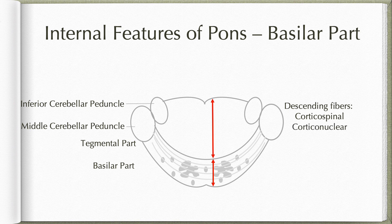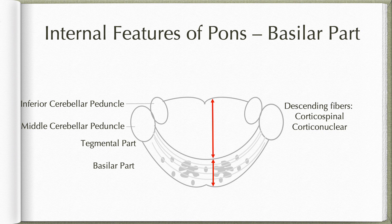The second group of fibers are the corticonuclear fibers. Some of these fibers relay in the pons itself; the rest descend to the medulla to relay in the medullary nuclei. Those fibers which relay in the sensory nuclei will have arrived from the contralateral cortex entirely, whereas those that relay in the motor nuclei — part of them will have come from the contralateral cortex, but a few fibers will also have come from the ipsilateral cortex. This is an important feature to differentiate facial palsy caused by upper motor neuron lesion versus lower motor neuron lesion, which we will discuss at a later stage.